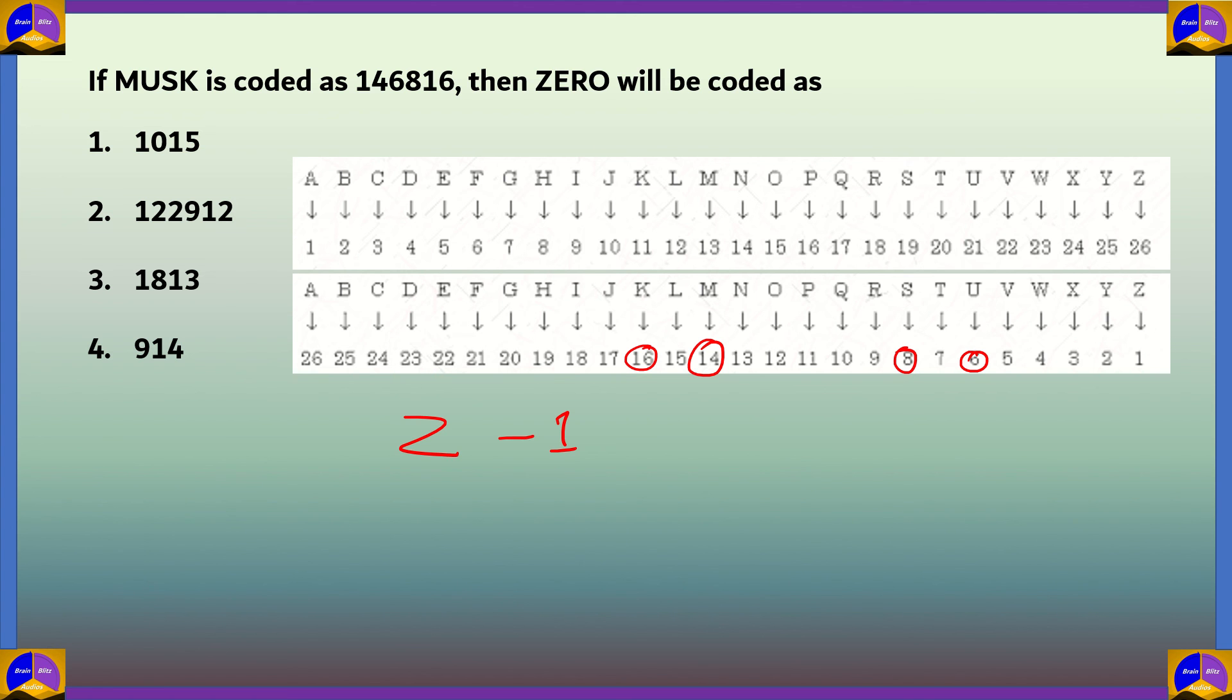Z is 1, E is the 22nd, R would be the 9th and O would be the 12th. So ZERO would be 1, 22, 9, 12.